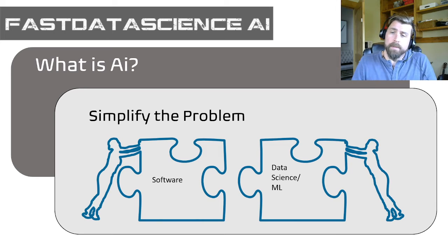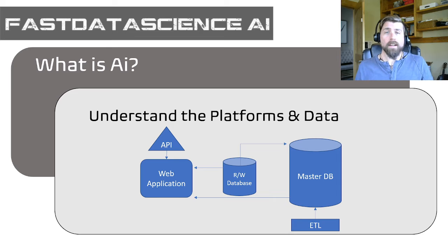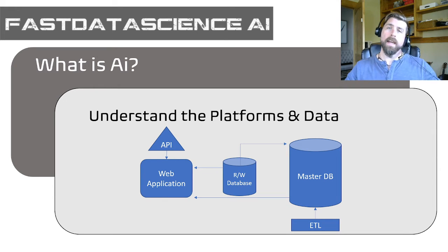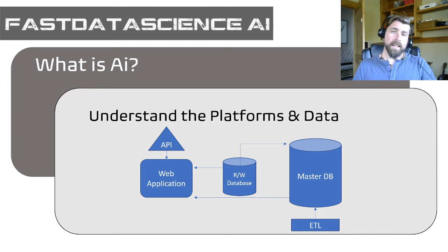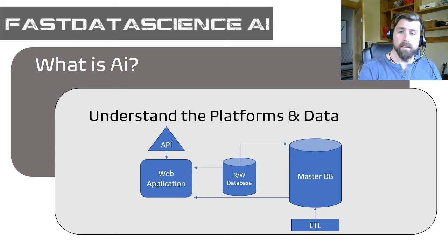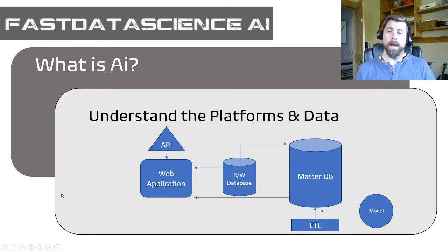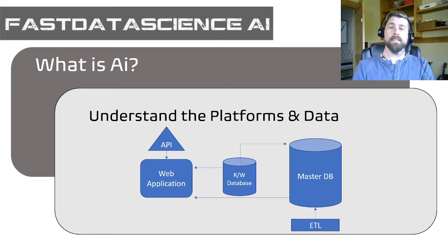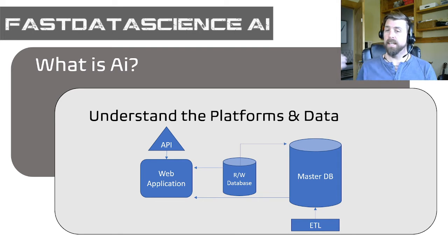We get more sophisticated in the implementation of these two practices, but at its core, this is essentially what is happening. To understand where data science and machine learning can come into a software application to create something we can call artificially intelligent, we take a look at a simple architecture of a typical web application. In the diagram here, I have a web application, and in that web application, maybe you've got a user that comes in and they do something.